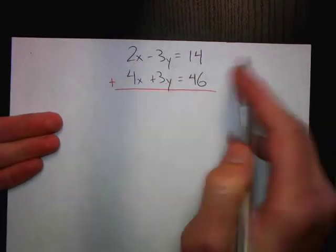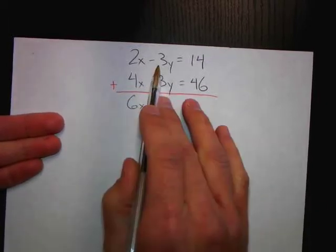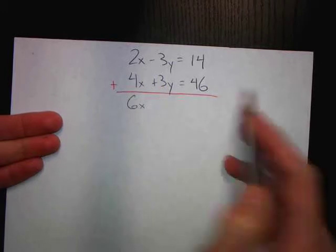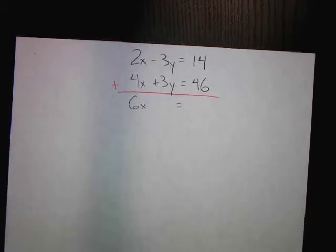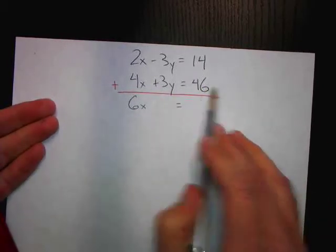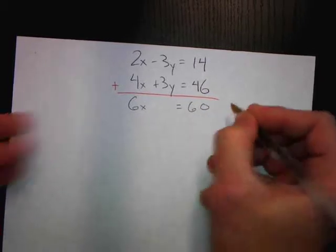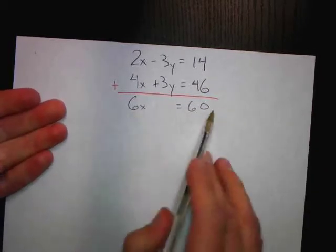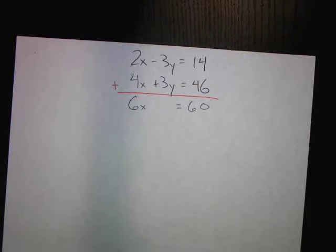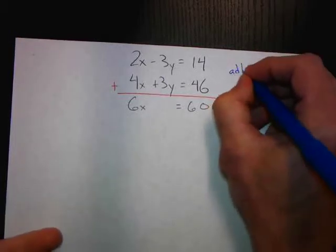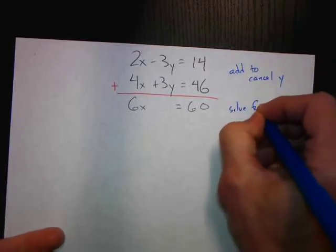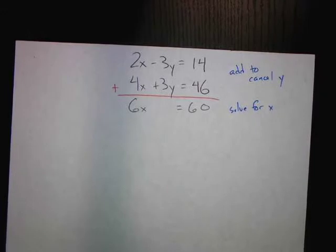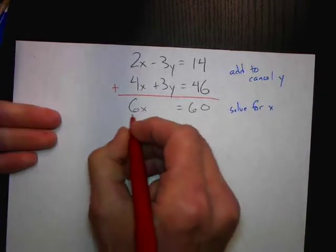So we have 2x plus 4x, which is 6x. Then minus 3y plus positive 3y — that cancels. The y's are completely gone. And then 14 plus 46 leaves us with 60. We have a brand new equation with one variable: 6x equals 60. We've added to cancel the y's, and now we can solve for x.